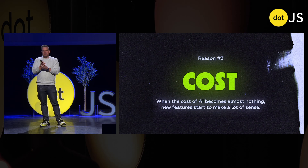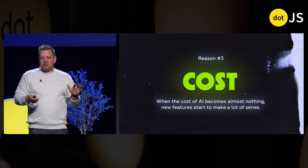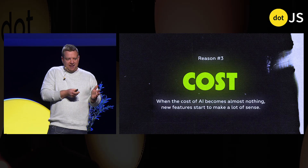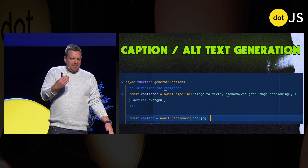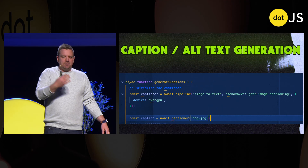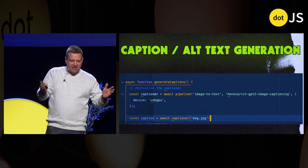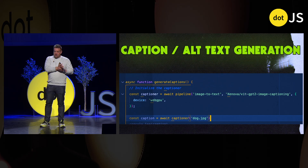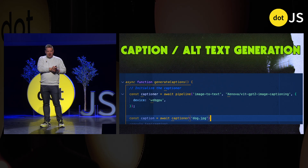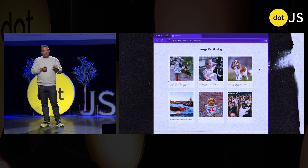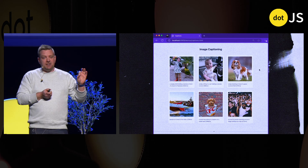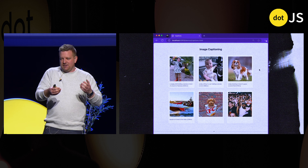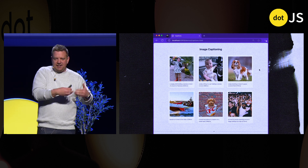Reason number three is cost. When the cost of AI becomes almost nothing, new features start to make a lot more sense. AI is getting very cheap right now, but there are still things that don't make financial sense at scale. One of them might be captioning or image generation. On something like Bluesky or Twitter, you upload an image and you're supposed to put alt text on it, but a lot of people don't because it takes too long. You could use a model in the browser to go ahead and caption it. Here I've got a bunch of images and it's firing up captions for all of them — it gets you 90–95% of the way there.